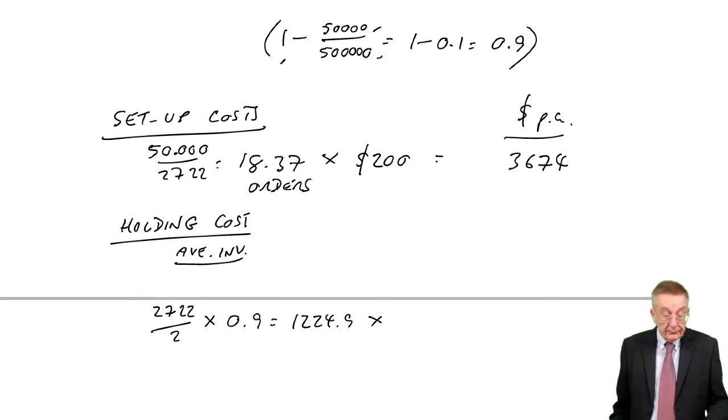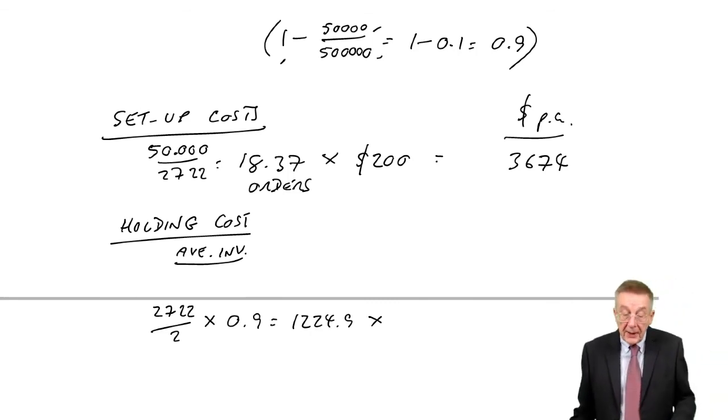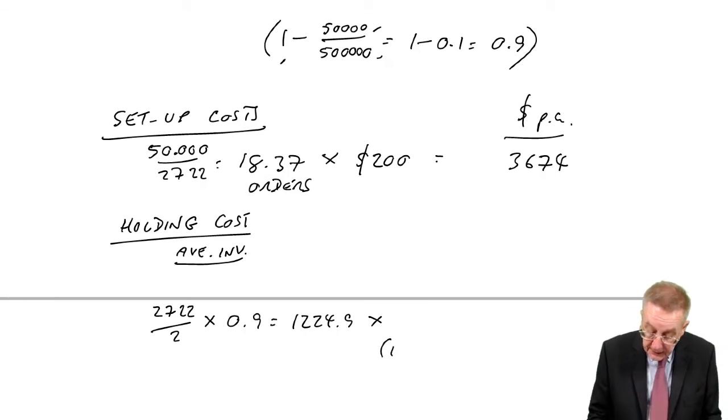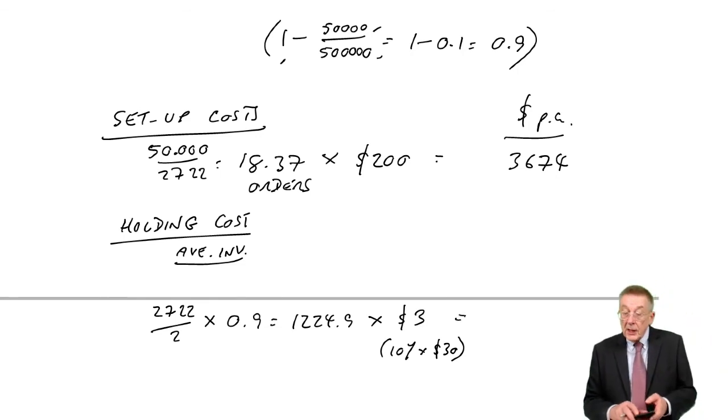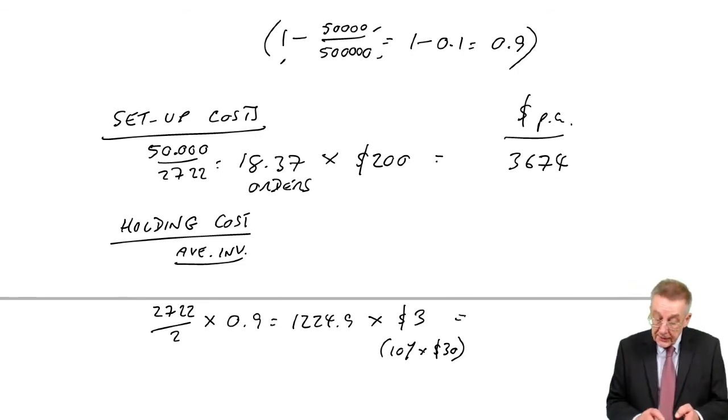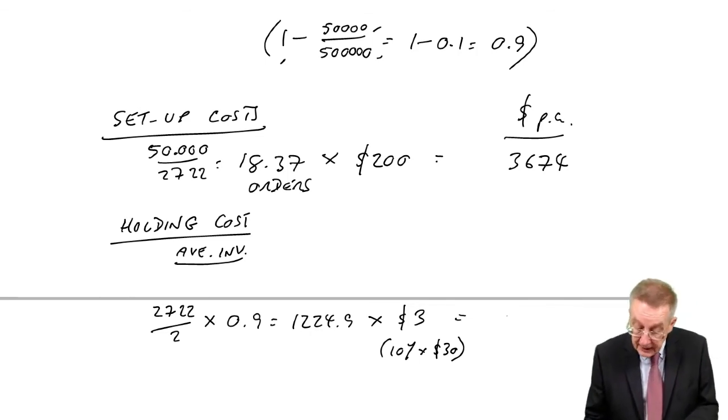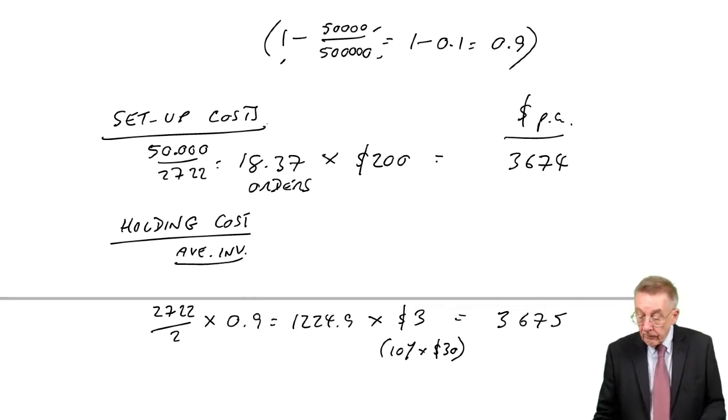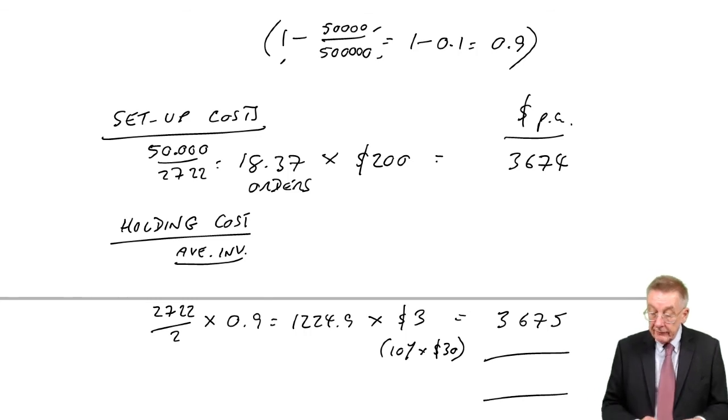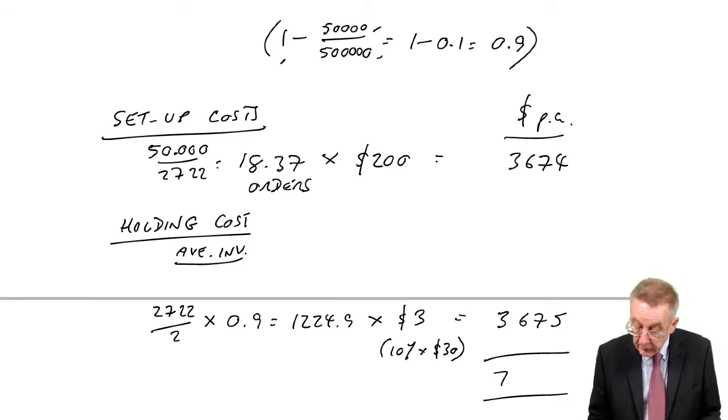And the holding cost per unit, remember it was 10% of the inventory value of $30, so it was $3. And so the holding cost, 1224.9 times 3, is $3675. The total now, $7349.